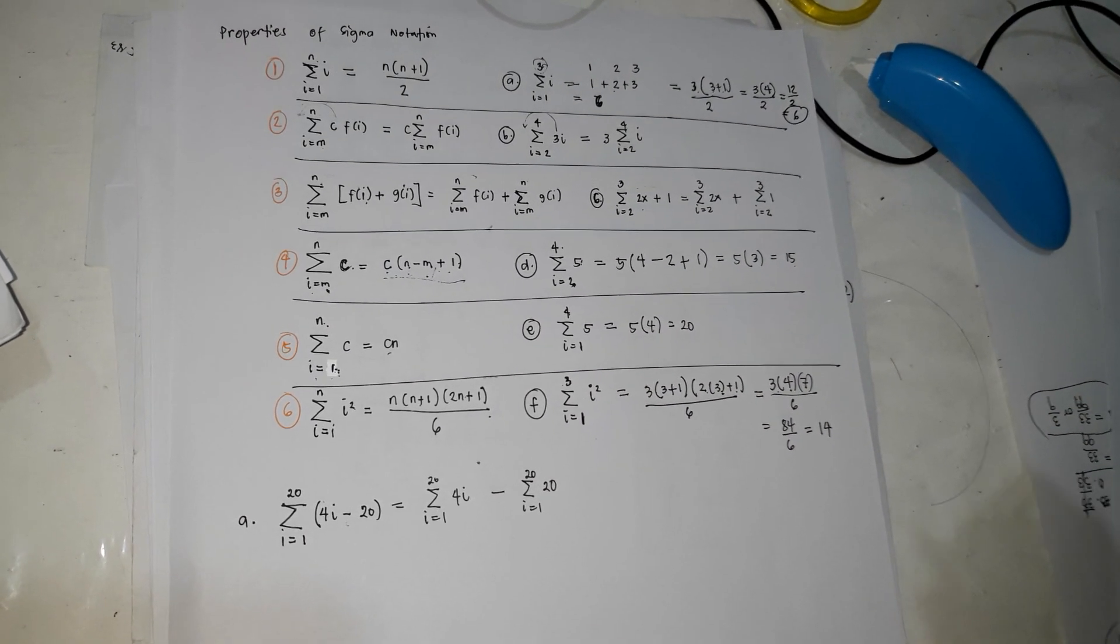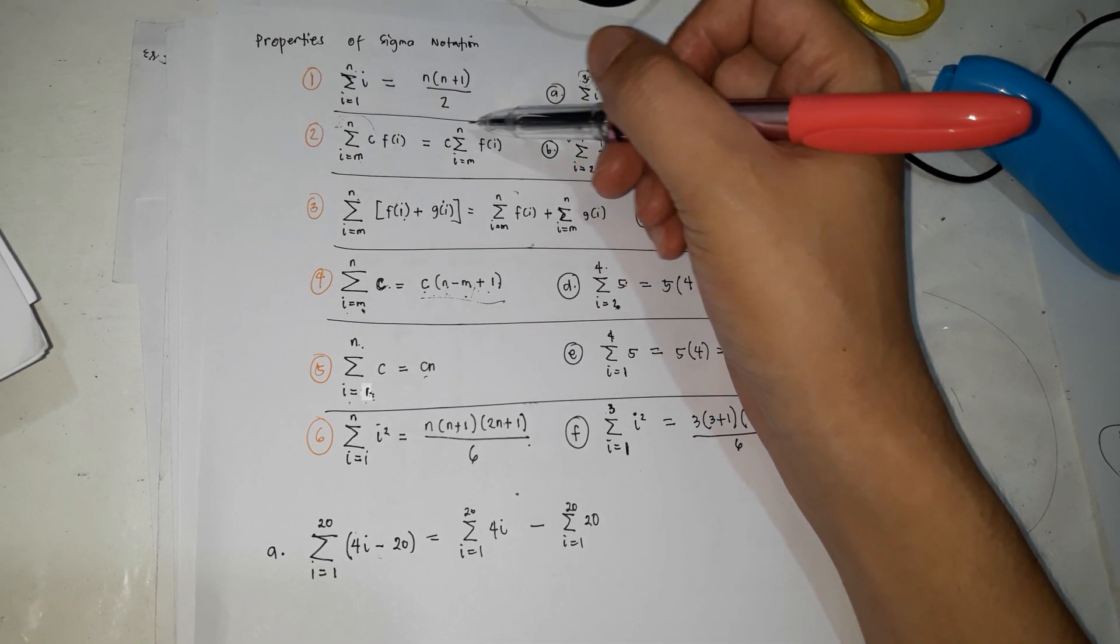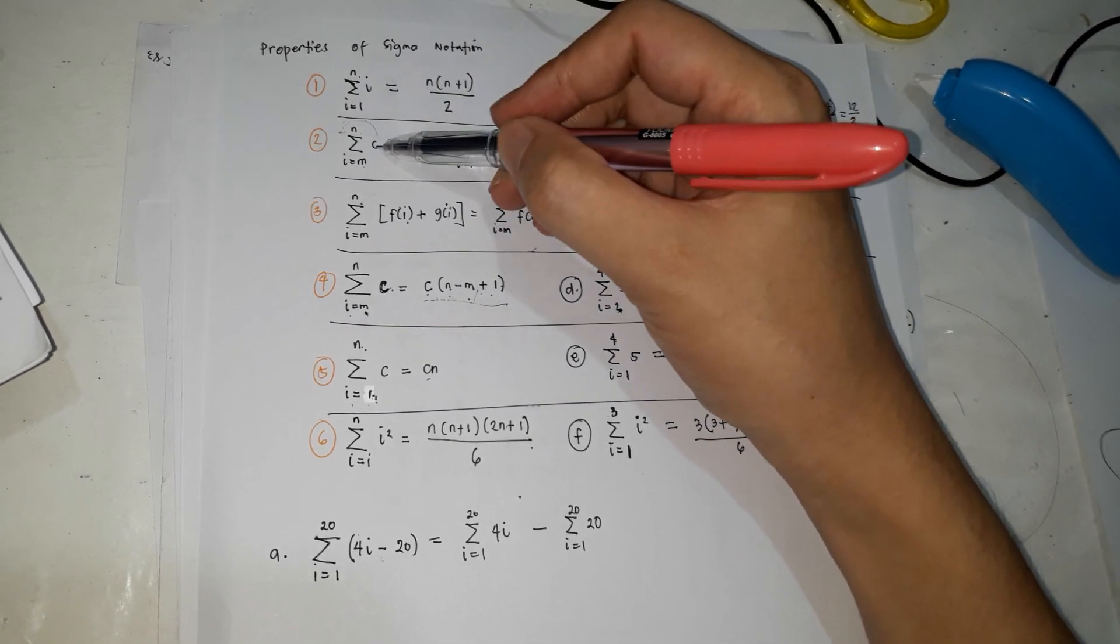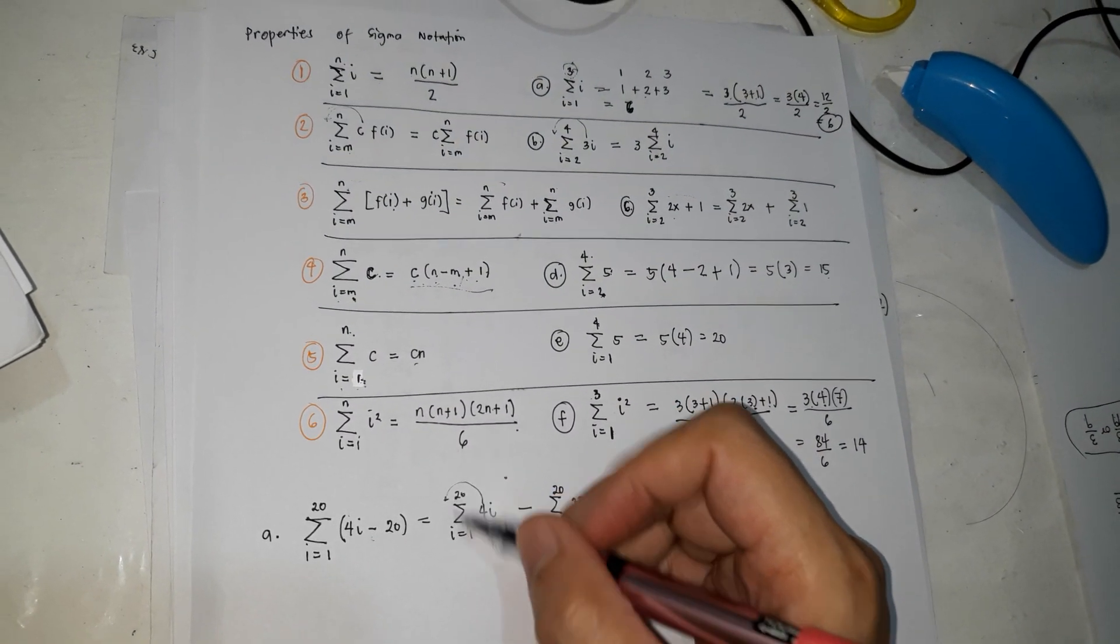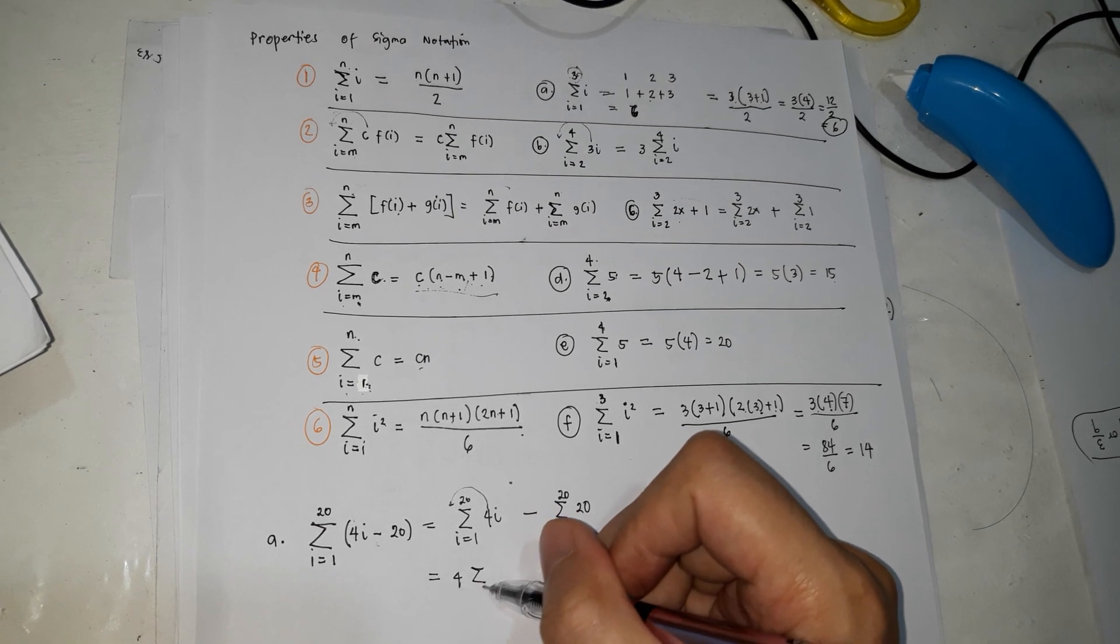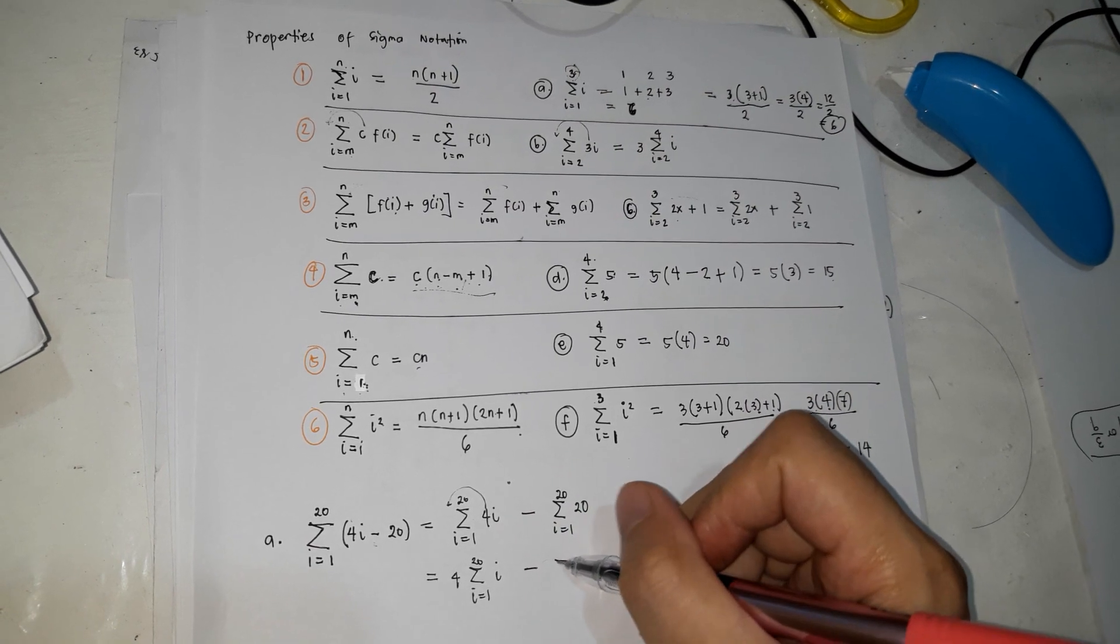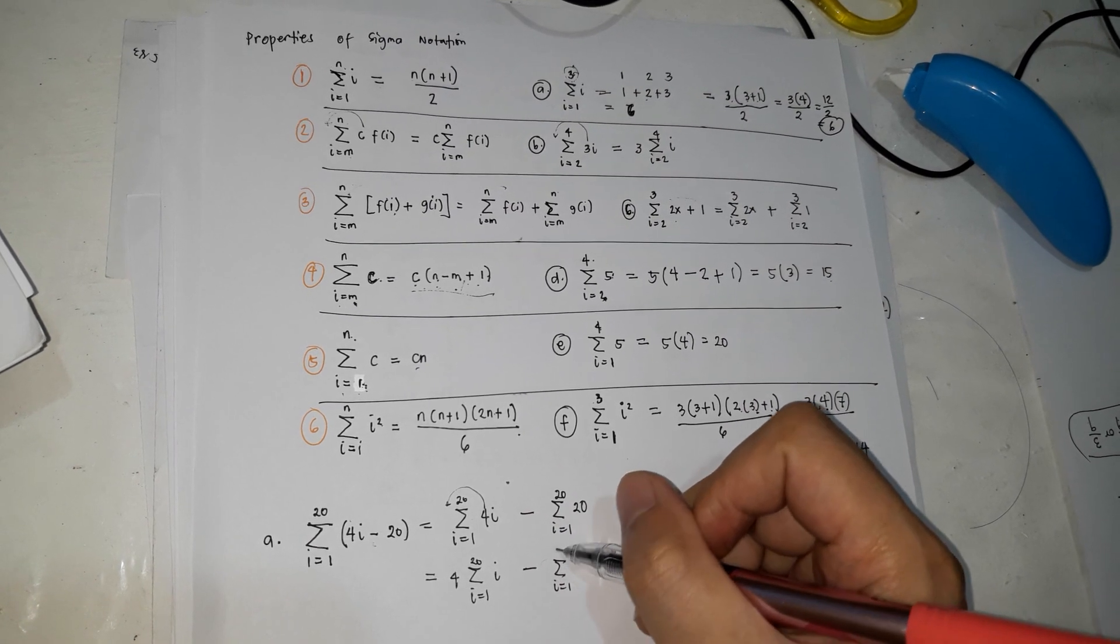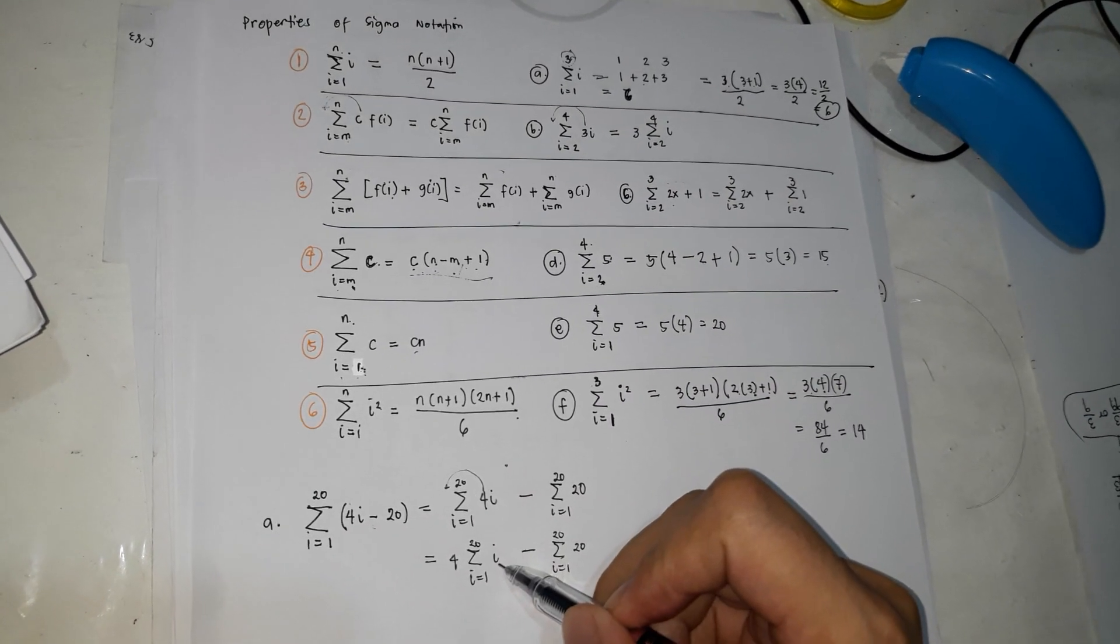Next, yung second property, kapag may constant, pwede mong ilabas. So itong 4, constant yan siya, pwede mong ilabas. So 4, summation of i, 1, 20, i minus summation of i, 1, 20, 20. As you notice, i na lang dito.